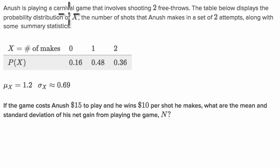Anoush is playing a carnival game that involves shooting two free throws. The table below displays the probability distribution of X, the number of shots that Anoush makes in a set of two attempts, along with some summary statistics.